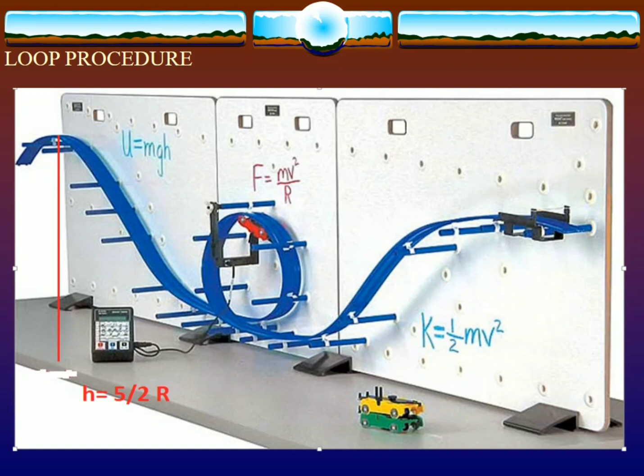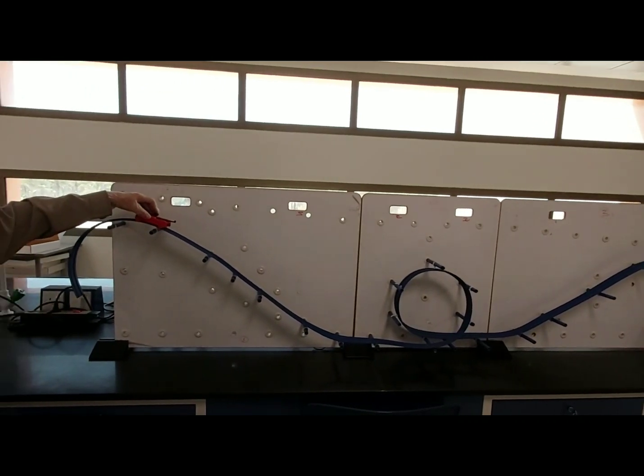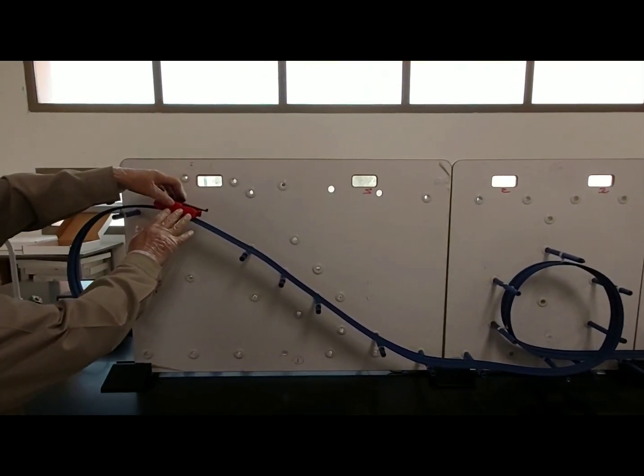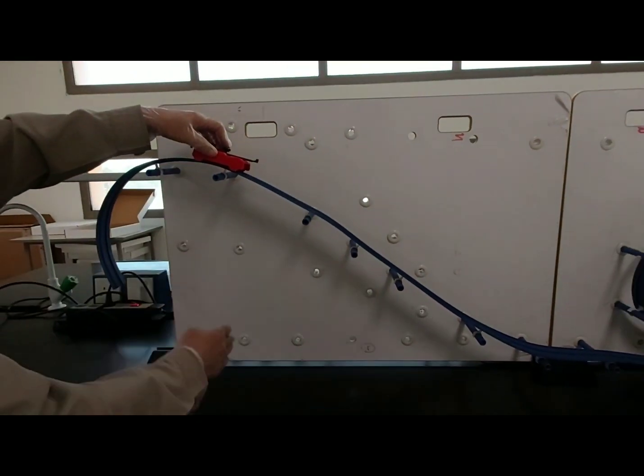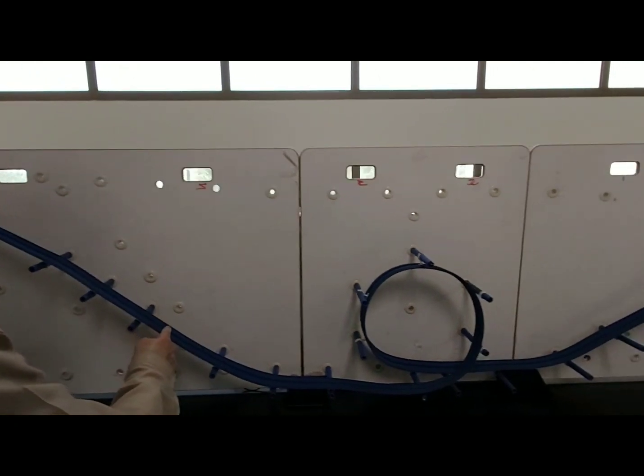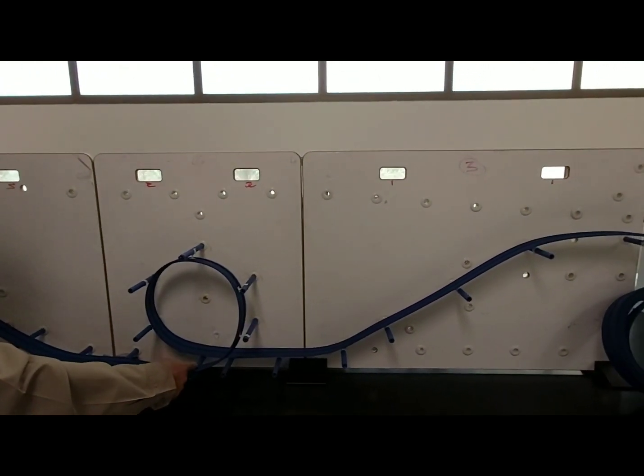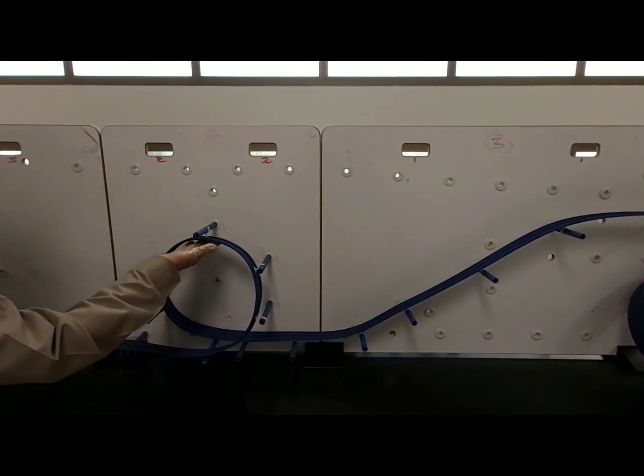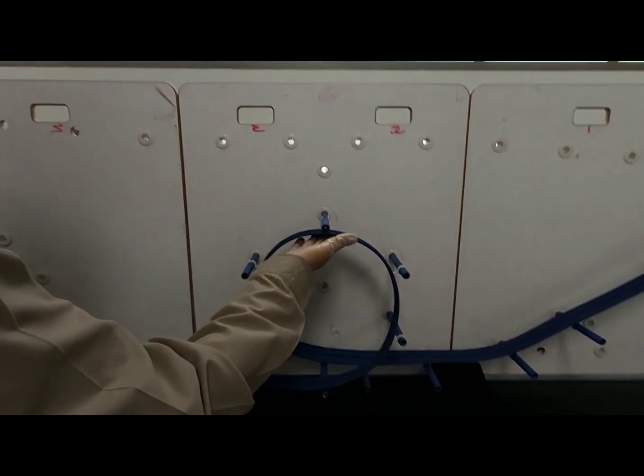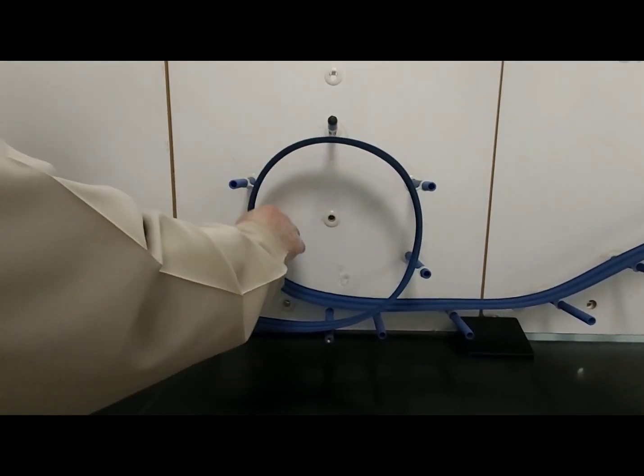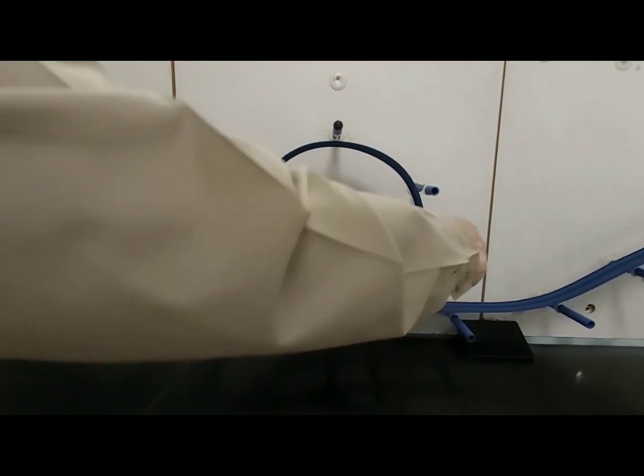The height equals 5 over 2 R. In this experiment, this is called the loop procedure. We release the car from a certain height. If this height is sufficient, the car will go here. Here kinetic energy will be maximum, and then it can complete this rotation. The car will be rotating and will stay with the track and not fall down because of gravity. It completes the rotation because it has centripetal force, so it is rotating like that and will move away.